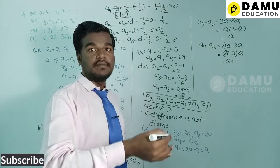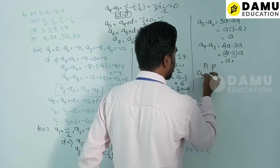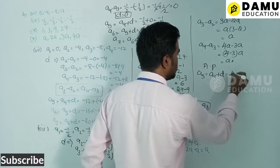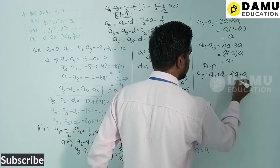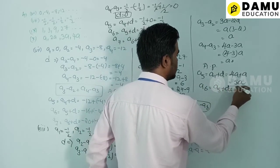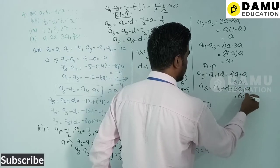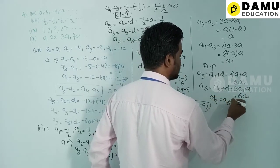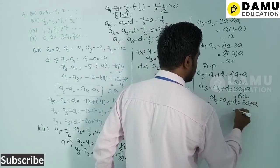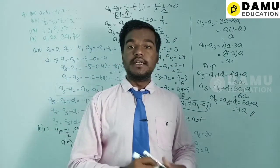Now a5 = a4 + d = 4a + a = 5a. Then a6 = a5 + d = 5a + a = 6a. And a7 = a6 + d = 6a + a = 7a. The three more terms are 5a, 6a, and 7a.